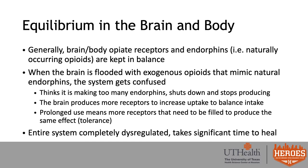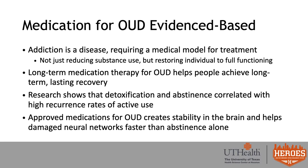Instead of the body being in equilibrium, it becomes completely dysregulated — too many receptors, more substance coming from the outside, and the body has stopped producing natural endorphins. This dysregulation takes significant time to heal. If we remove the substance, the body goes into an uncomfortable response because those receptors want to be filled and there's nothing to fill them. The body is no longer making its own endorphins, which is exactly where medication for opioid use disorder is very much evidence-based.